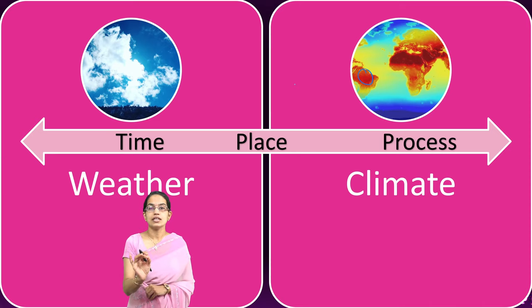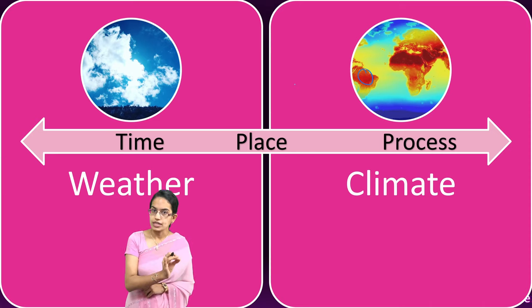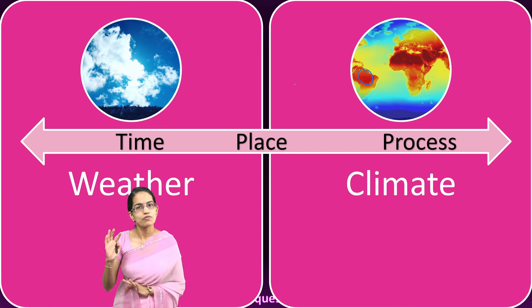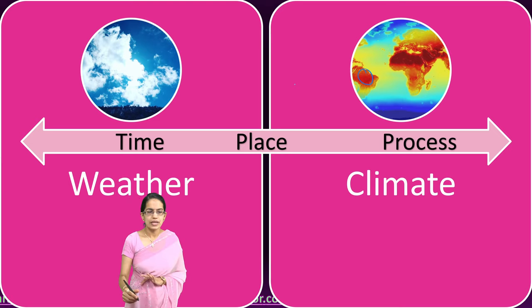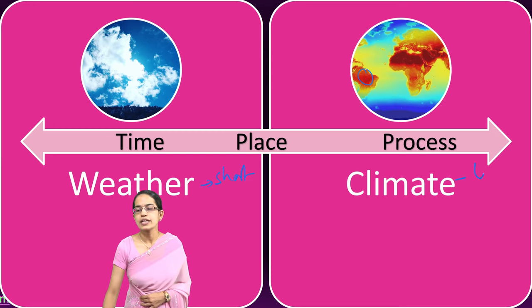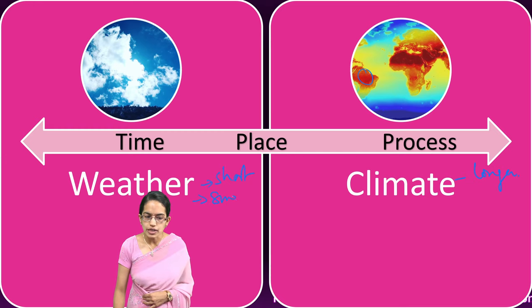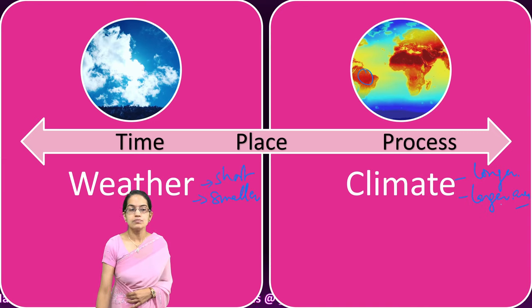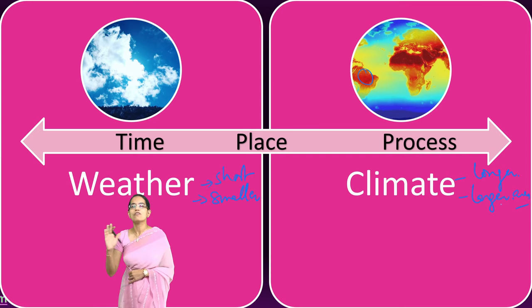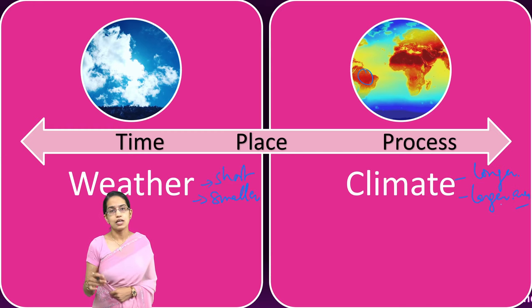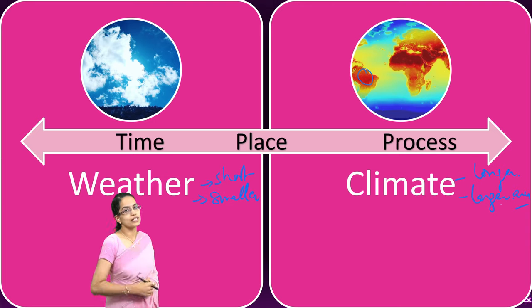When we consider the differences between climate and weather, we differentiate on three parameters: time, place, and process. Weather is for a short duration of time; climate is for a longer duration. Based on place, weather covers a smaller area in contrast to climate, which covers a larger area. In terms of process, weather is a day-to-day condition — but on what parameters does this day-to-day condition depend?